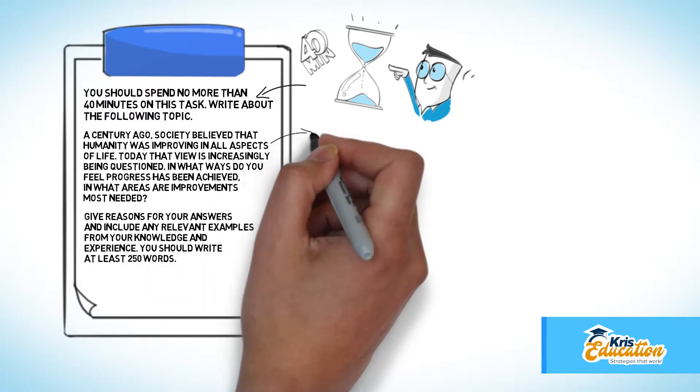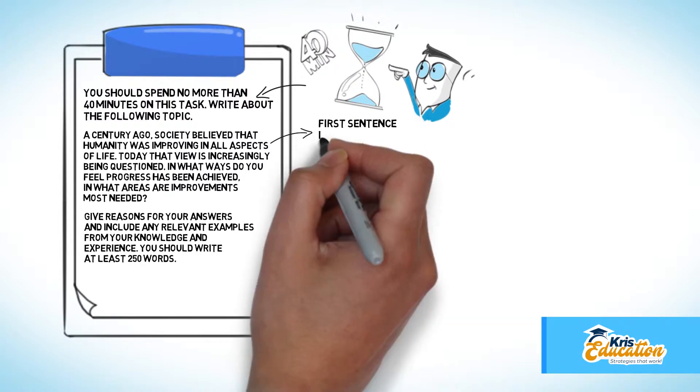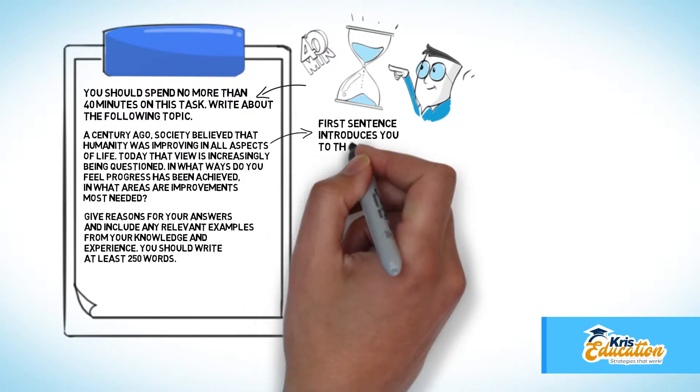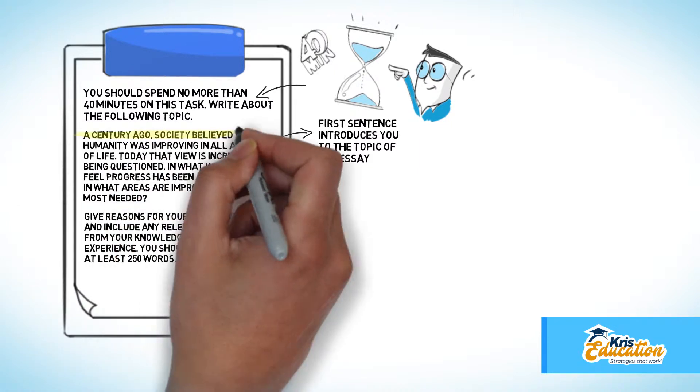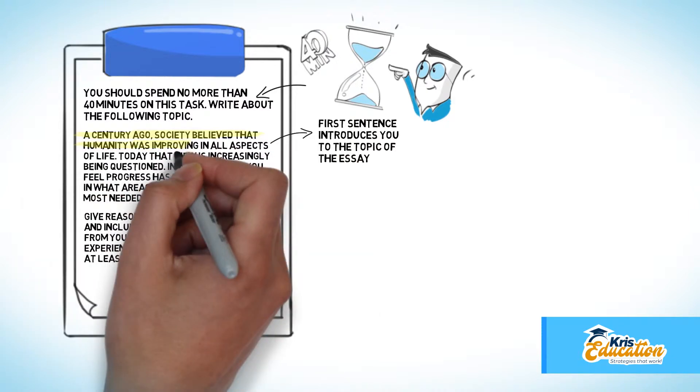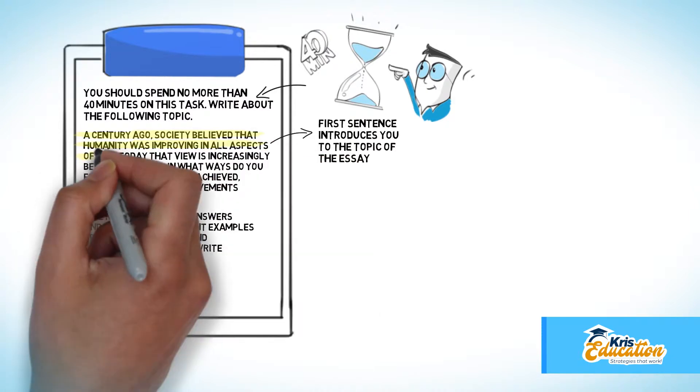The first sentence of an IELTS question usually introduces you to the topic you have to discuss in your essay. For example, in this particular essay, the question is saying that 100 years ago people thought that the human race was steadily making progress in all areas of life.